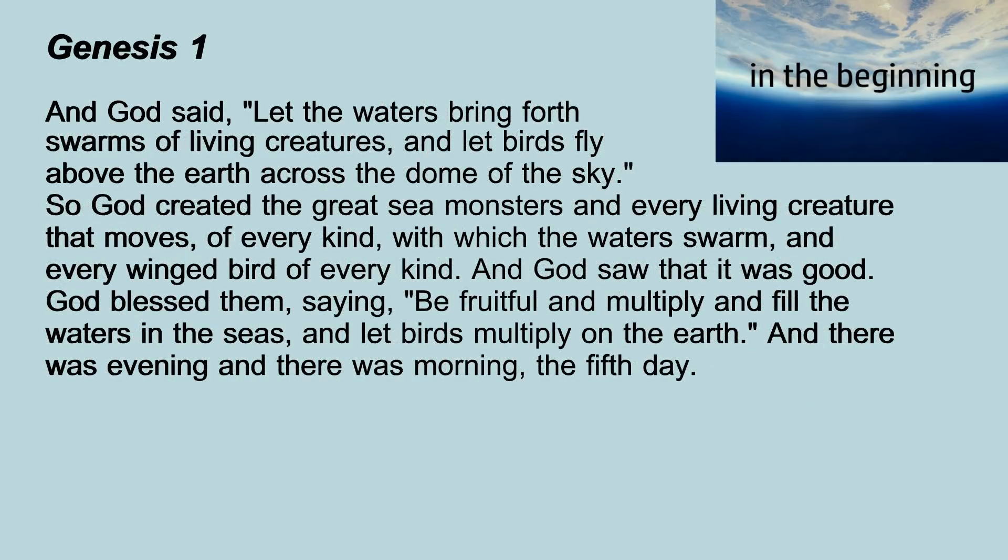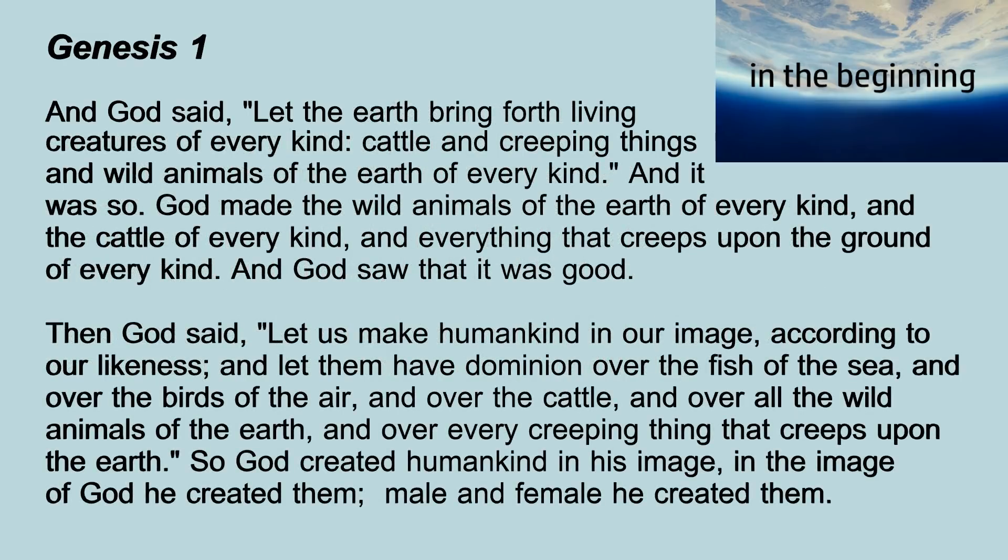And God said, Let there be lights in the dome of the sky to separate the day from the night, and let them be for signs and for seasons and for days and years. God made the two great lights, the greater light to rule the day and the lesser light to rule the night and the stars. And God saw that it was good. And there was evening and there was morning, the fourth day. And God said, Let the waters bring forth swarms of living creatures, and let birds fly above the earth across the dome of the sky. So God created great sea monsters and every living creature that moves of every kind. God blessed them, saying, Be fruitful and multiply and fill the waters and the seas, and let the birds multiply on the earth. And there was evening and there was morning, the fifth day.